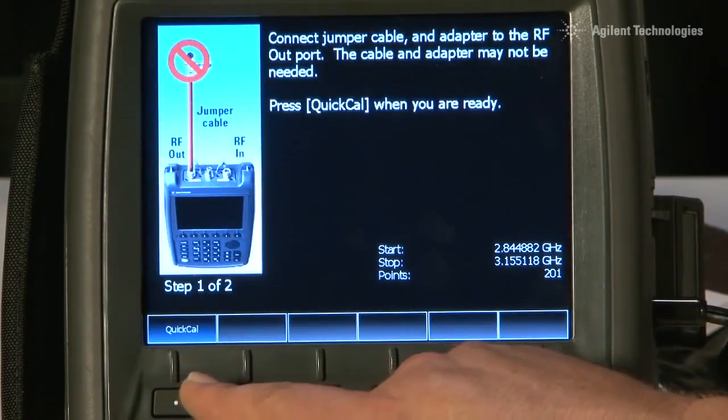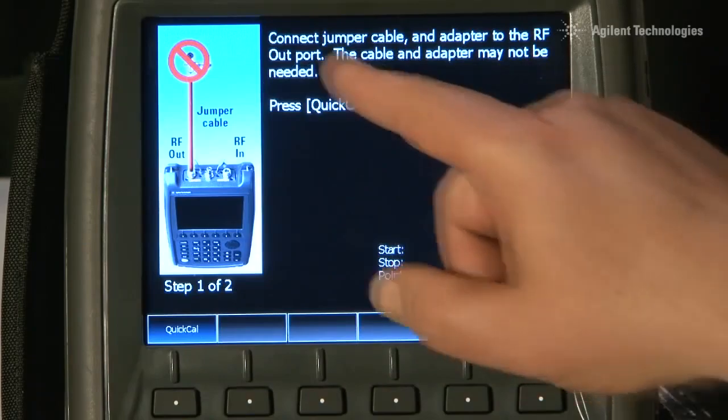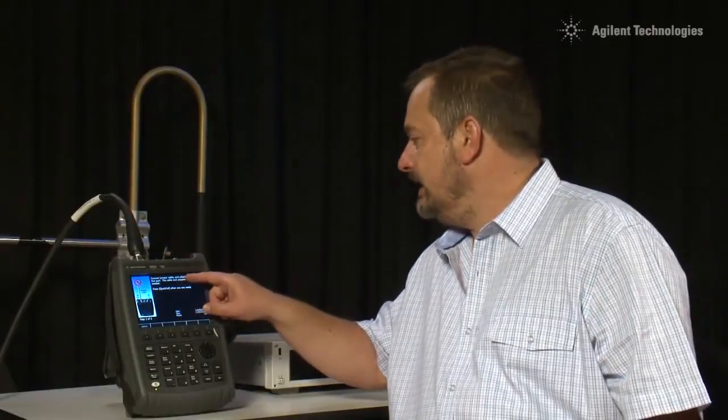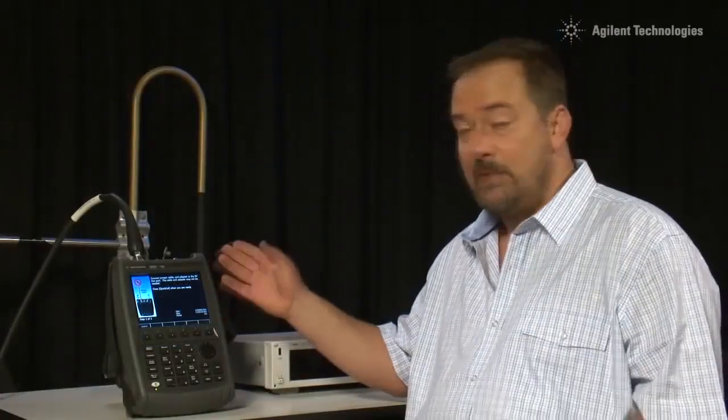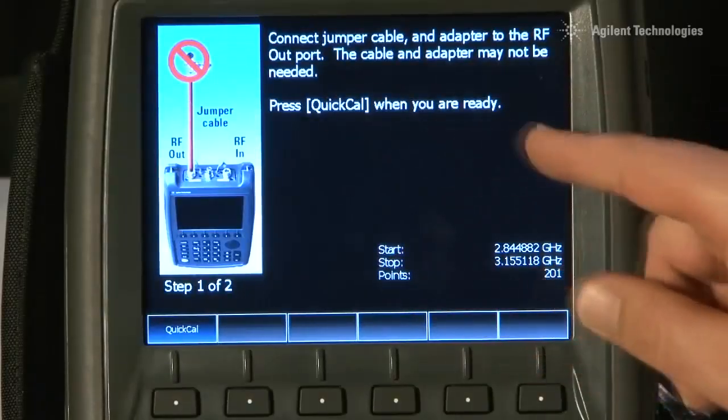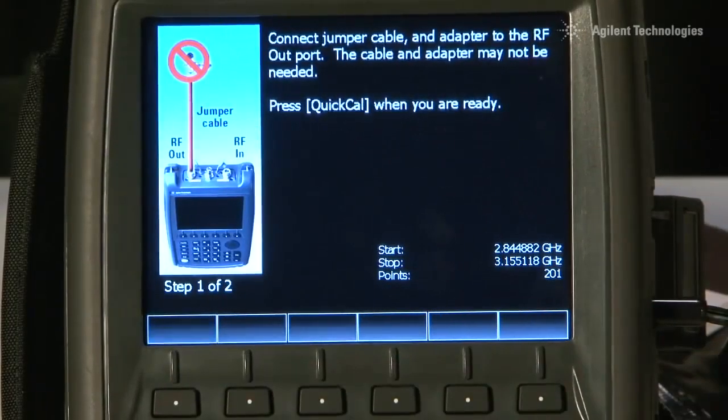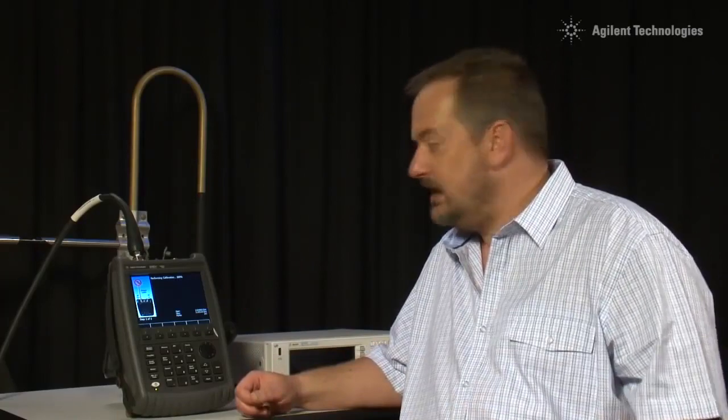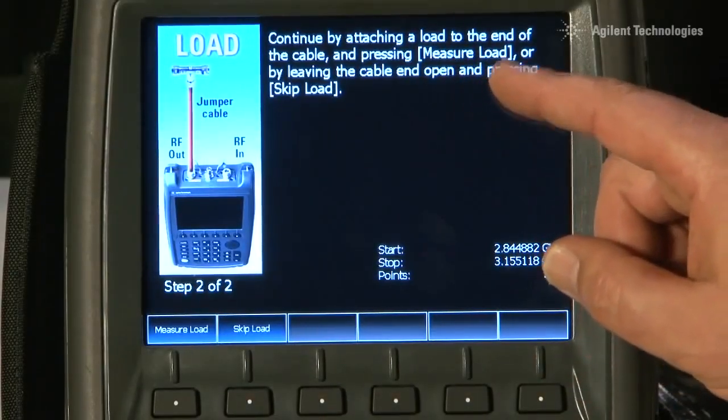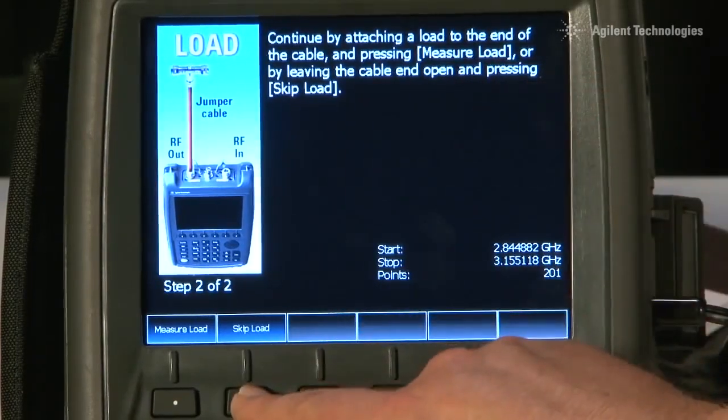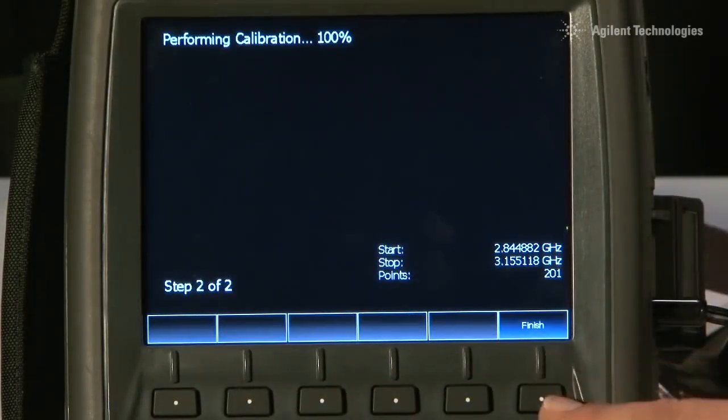The CalType is already set to QuickCal, so I will press Start Cal, and we just follow the instructions. Connect your jumper cable, which we have got connected, and adapter to the RF out port. The cable and adapter may not be needed, but we want to calibrate out the effect of this cable. It says, Press QuickCal when you are ready. So I will press that, and it is now performing the calibration. It is just using the open circuit end of the cable. It does not require any specific standards. We do have the option of connecting a 50 ohm load if we want a better quality Cal, but we do not need that in this instance. I will press Skip Load, and then Finish.